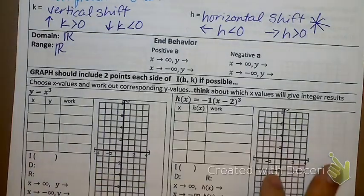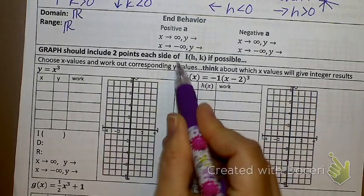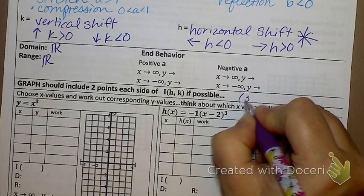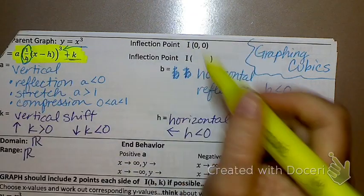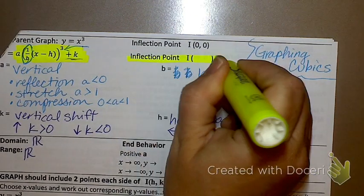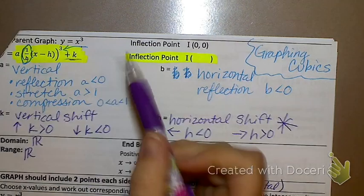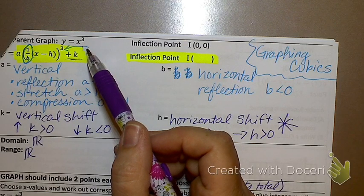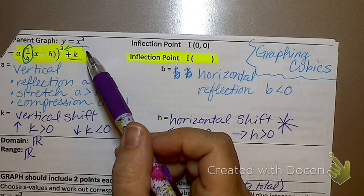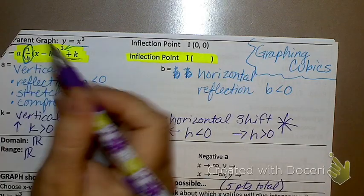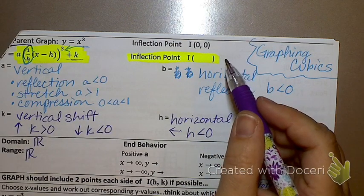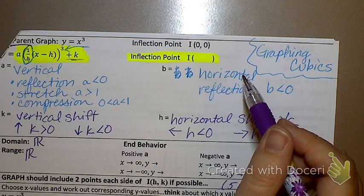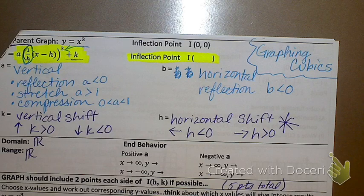End behavior is a little confusing to write here, so I'll go down to the graph and write it there. The graph should include two points on each side of the inflection point — five points total. I also didn't touch on the inflection point up here — that's one of the most important things for cubics. The book calls them parent functions; I call them mother functions. A cubic has a special point called an inflection point, just like a parabola has a vertex.